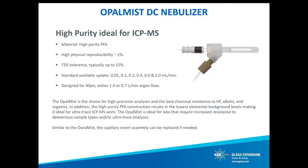The Opal Mist is our concentric nebulizer made from ultra-high purity PFA and is the choice for high-precision analyses with the best chemical resistance to hydrofluoric acid, alkalis, and organics. The high-purity PFA construction results in the lowest elemental background, making it ideal for ultra-trace ICP-MS work. Similar to the Duramis, the capillary insert assembly of the Opal Mist can also be replaced. The Opal Mist is an ideal choice for labs that require increased resistance to caustic sample types and/or ultra-trace analysis.